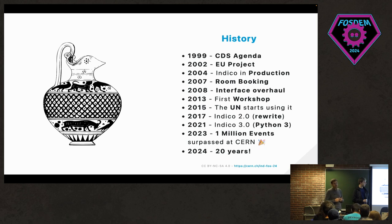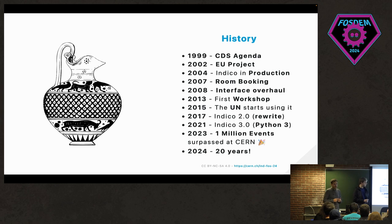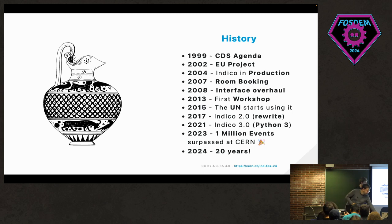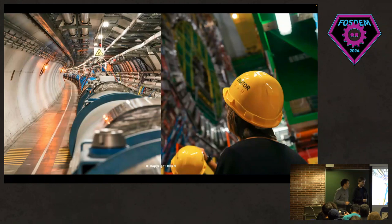In 2017 they did a full rewrite of the application — they were working on an aging software stack and changed even the database system, moving to PostgreSQL. In 2021 they moved to Python 3 with Indico 3.0. In 2023 they surpassed one million events at CERN alone, and in 2024 they celebrate their 20th anniversary.